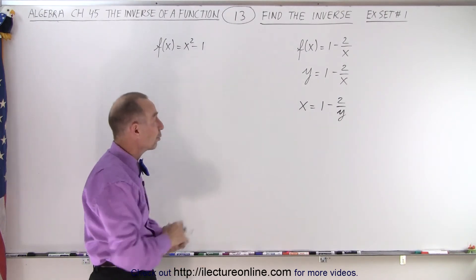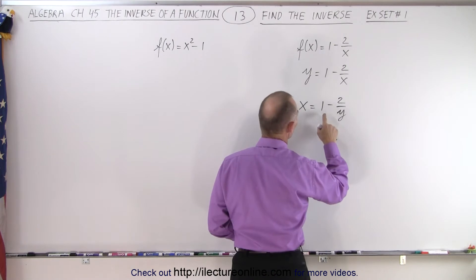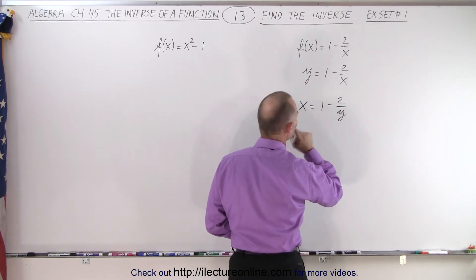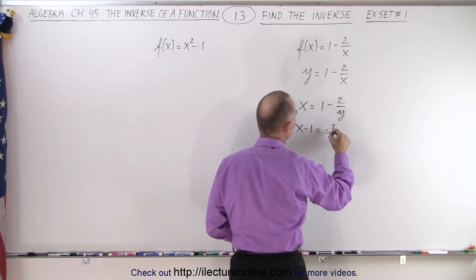Now we solve that equation for y. So what we're going to do here is we're going to move, let's see, what can we do? We'll move this over the other side. So we have x minus 1 is equal to minus 2 over y.